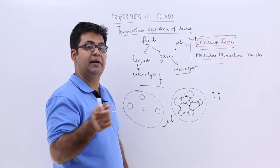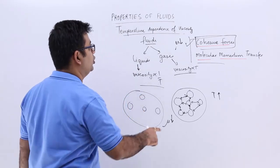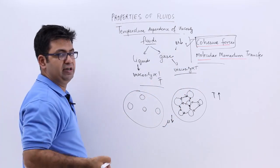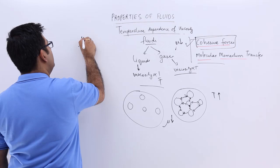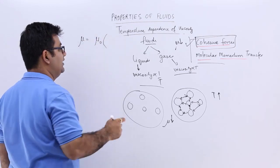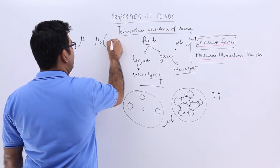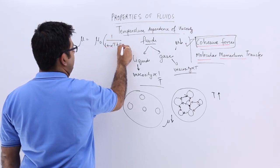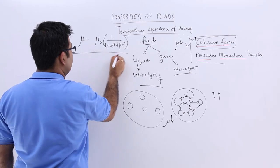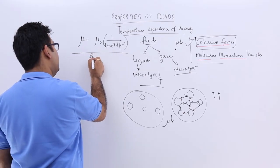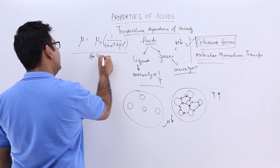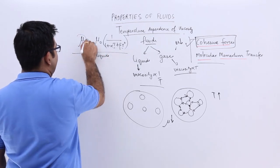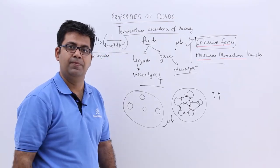To give a mathematical relation to viscosity for liquids and its dependence on temperature, we can say that mu at any temperature is equal to mu0 at 0 degree Celsius into 1 plus alpha T plus beta T square. And you can very clearly see that with increase in temperature, the viscosity has to go down.